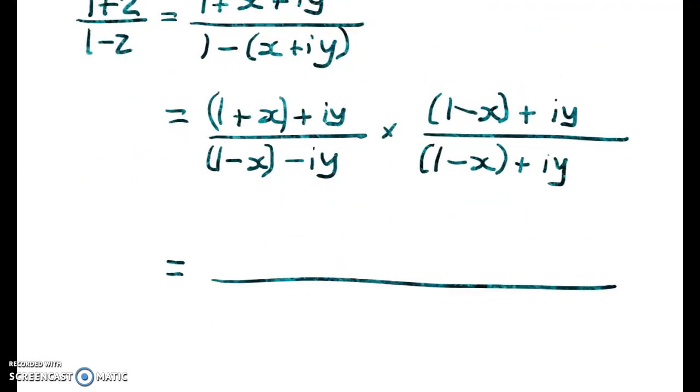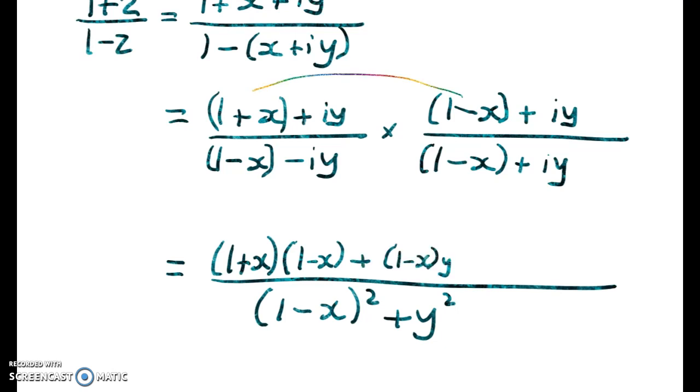Okay, so we're going to do the denominator first and we get our usual pattern (1-x)² + y². And then up here, we'll just go term by term. Okay, so that's those ones multiplied plus (1-x)y times i. So that's those two done.